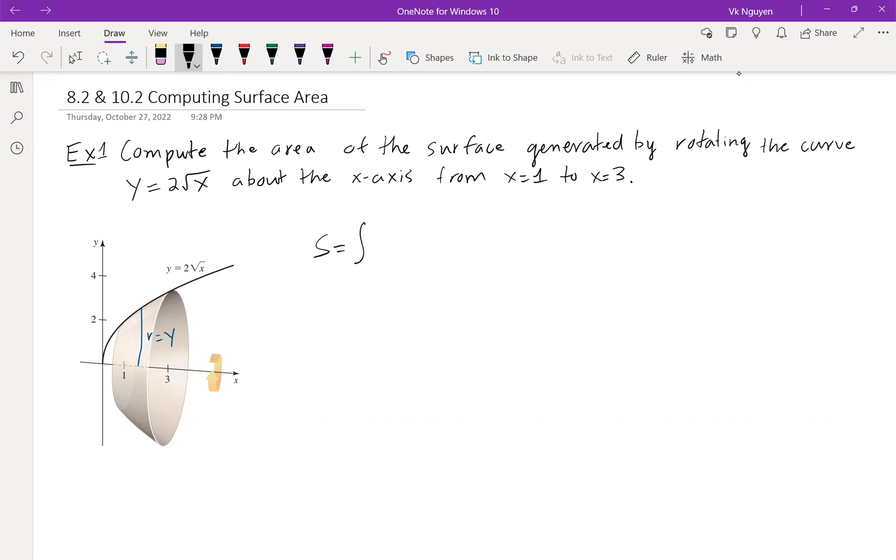The surface area is integral 1 to 3, 2 pi, radius is y, multiply to the arc length. Now the square root of f prime x square plus 1 dx. Now we can do the substitution. 2 pi y is 2 root x. The derivative of 2 root x is 2 times 1 over 2 root x, that's 1 over root x, square plus 1 dx.